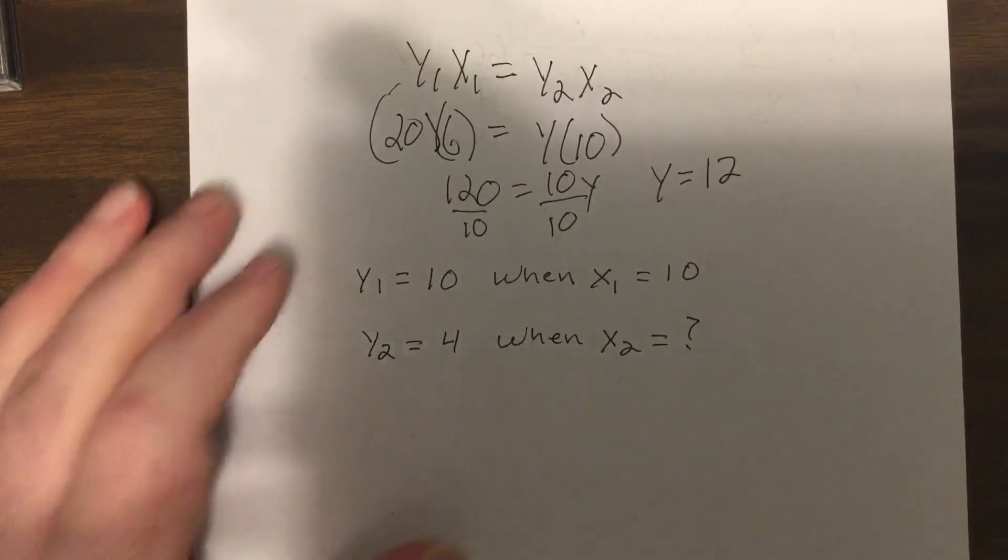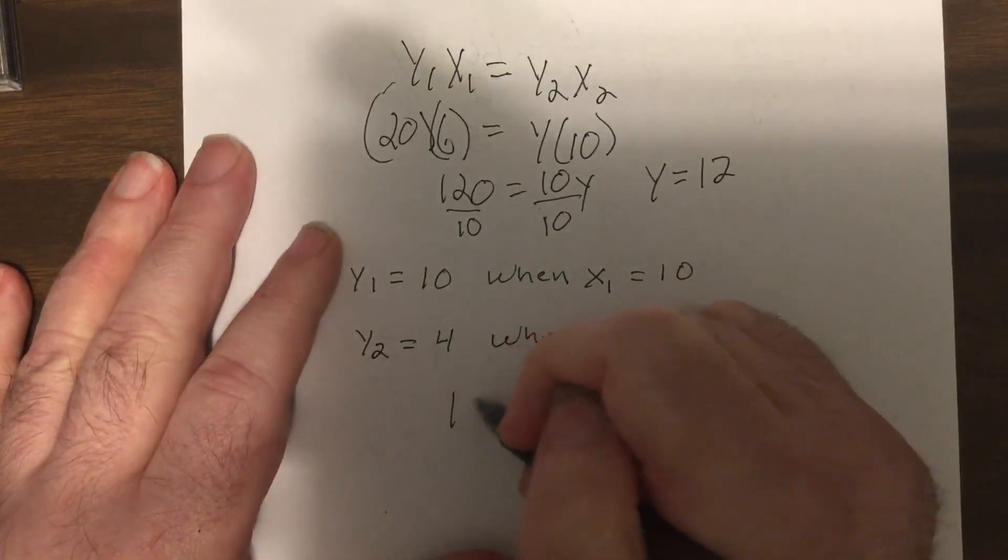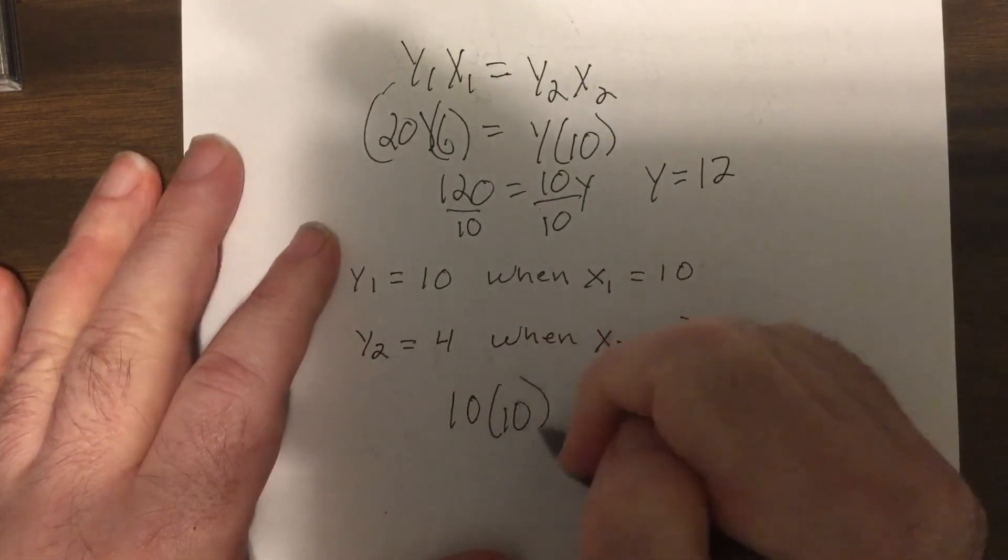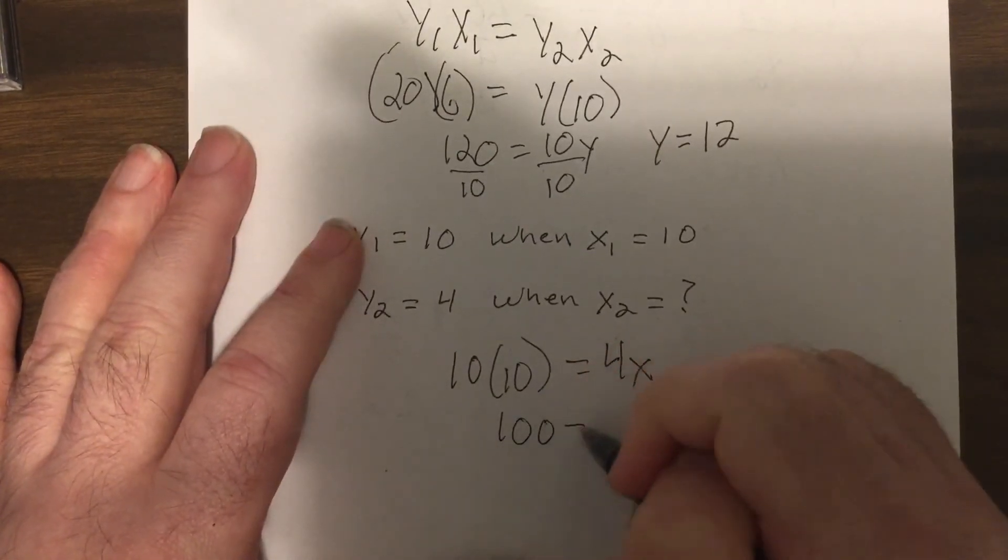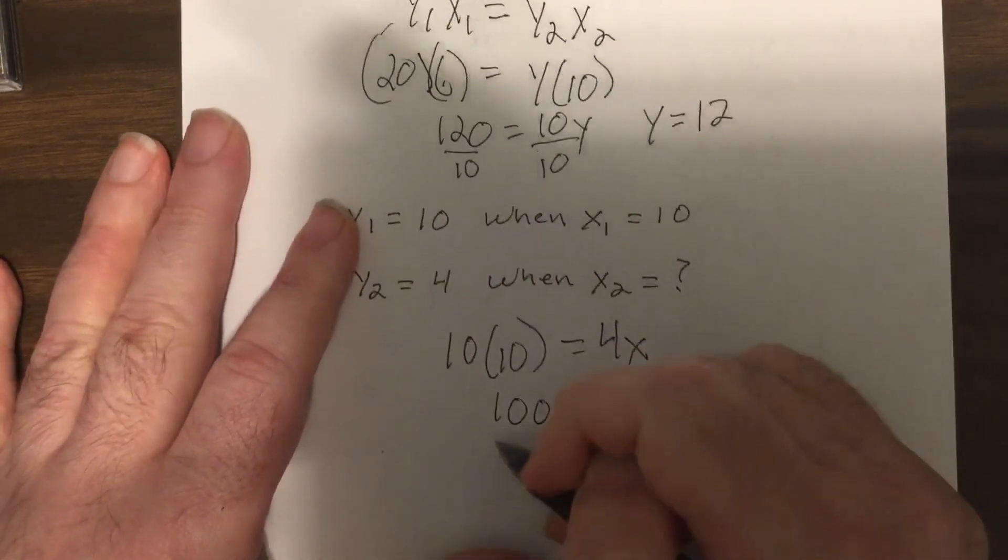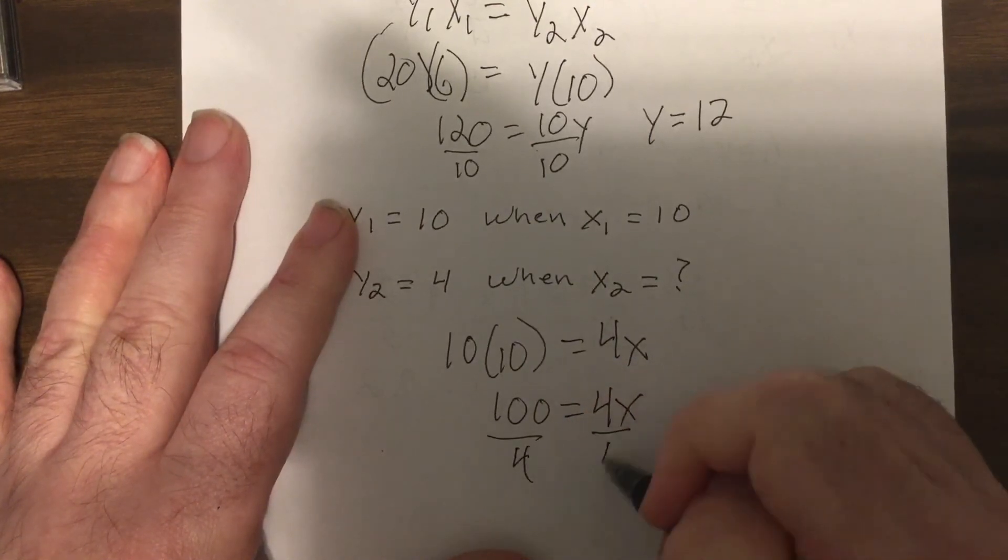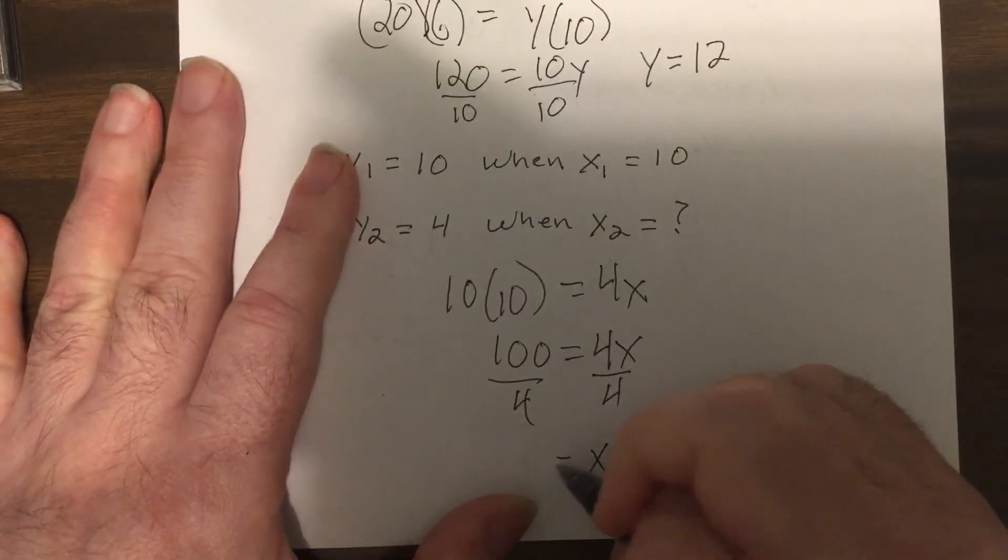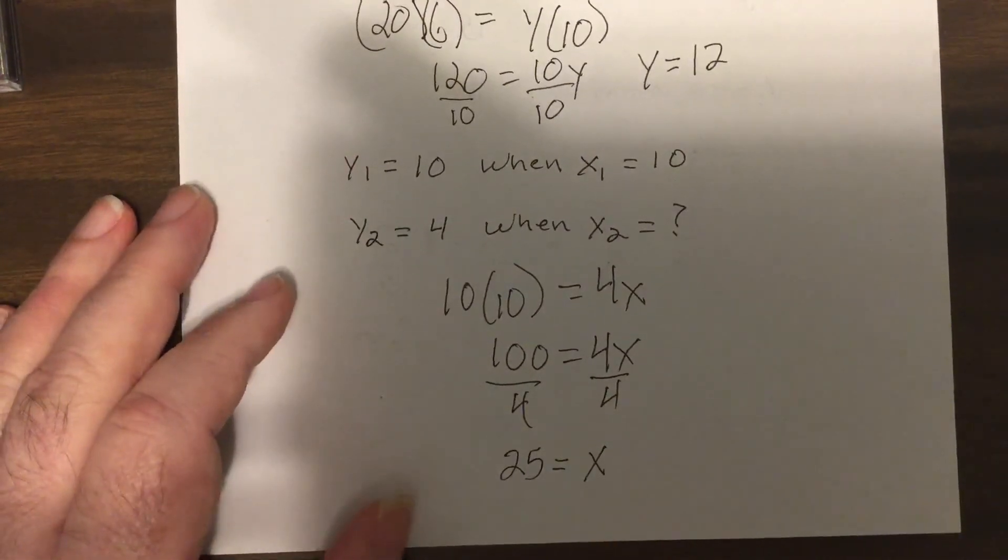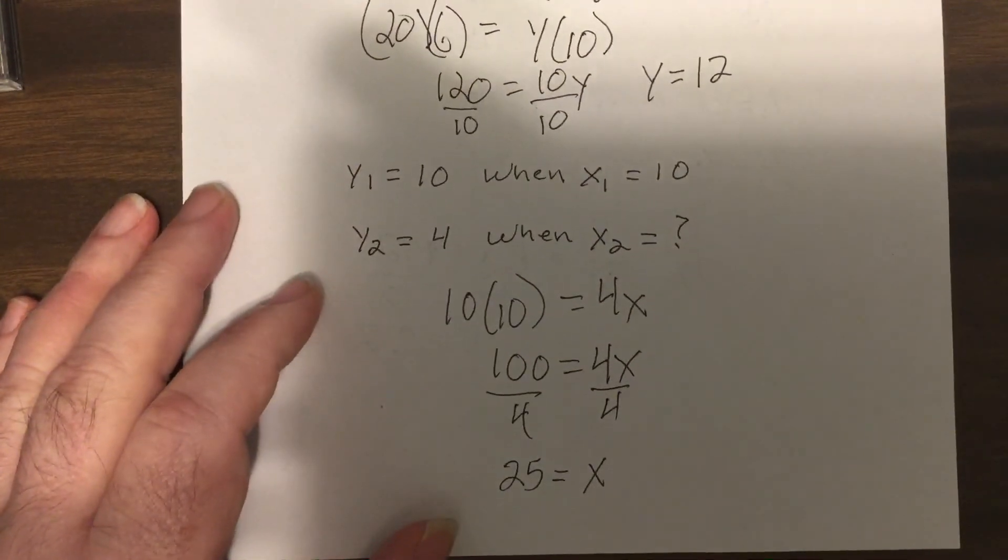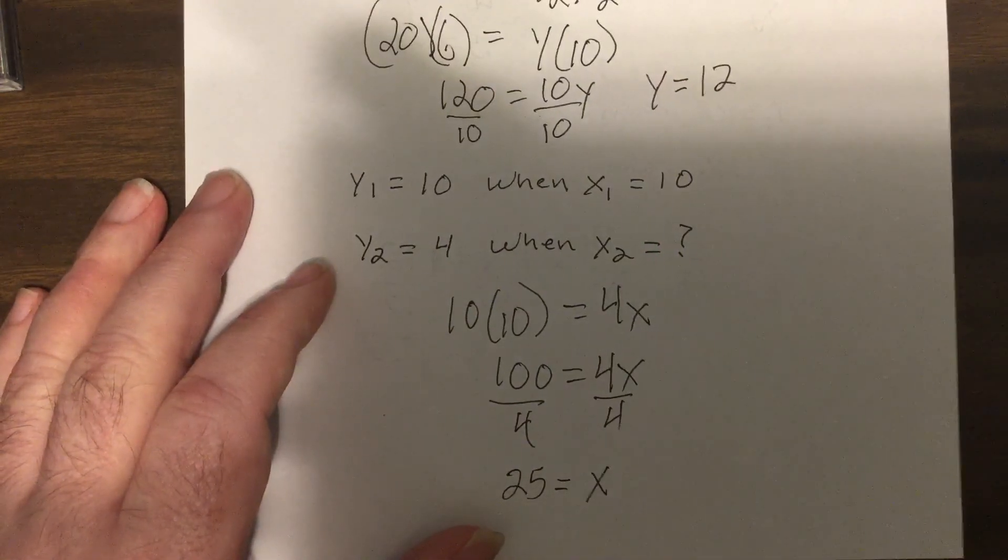Okay, so it's 10 times 10 equals 4x, so you'd have 100 equals 4x, divide by 4, x is 25. Have a good day.